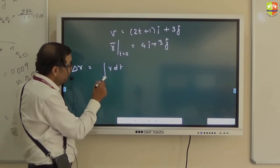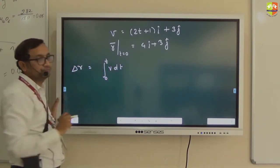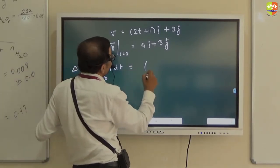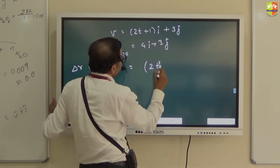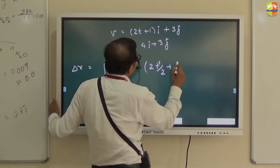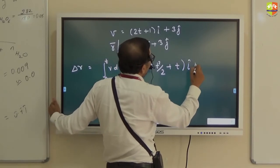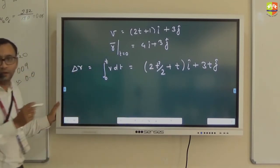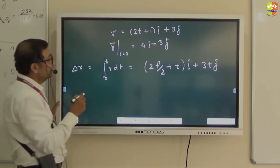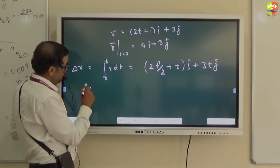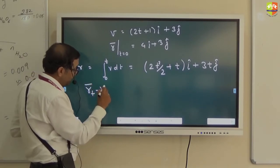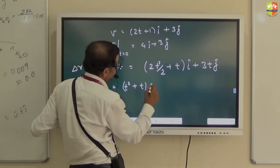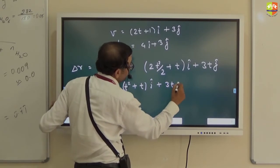But you will be doing it similarly. Here integral of V dt is your delta r. Correct. Thanks. t will go from 0 to t. Okay? So when you integrate, you will have, stop talking, 2t square by 2 plus t i cap plus 3t j cap. I have integrated from 0 to t. Okay?